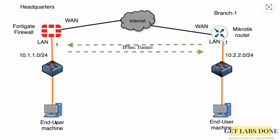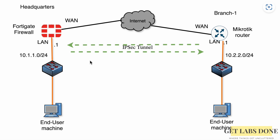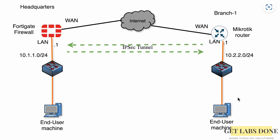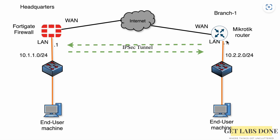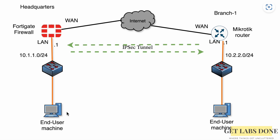Here is the topology we are going to work on. We have a FortiGate firewall at headquarters with a subnet of 10.1.1.0/24, and a MikroTik device at Branch 1 with a subnet of 10.2.2.0/24. Devices on both LAN sides can reach their local networks and the internet, but the headquarters LAN and Branch 1 LAN cannot communicate with each other — which we will fix by setting up an IPsec VPN.